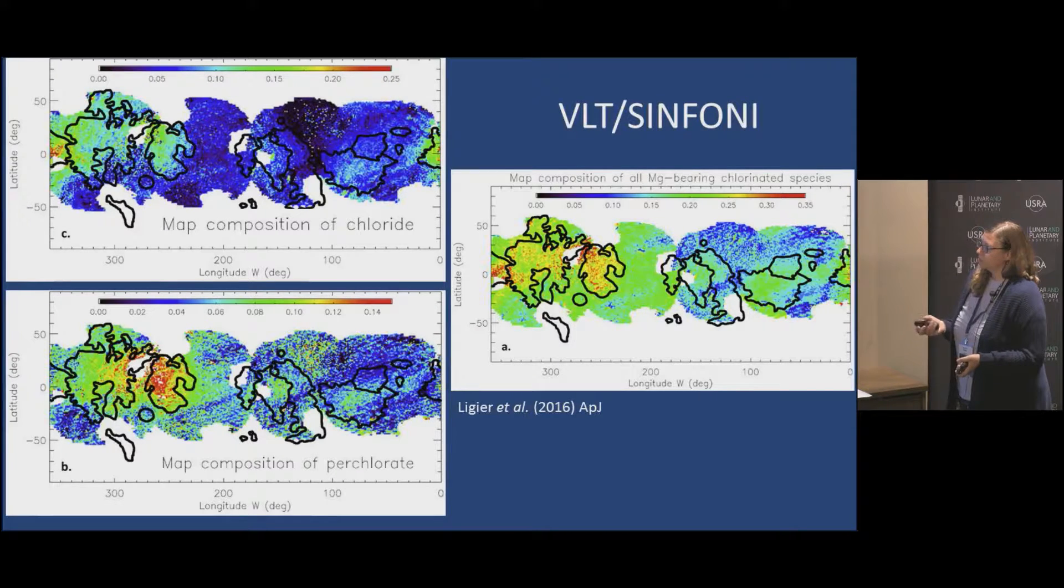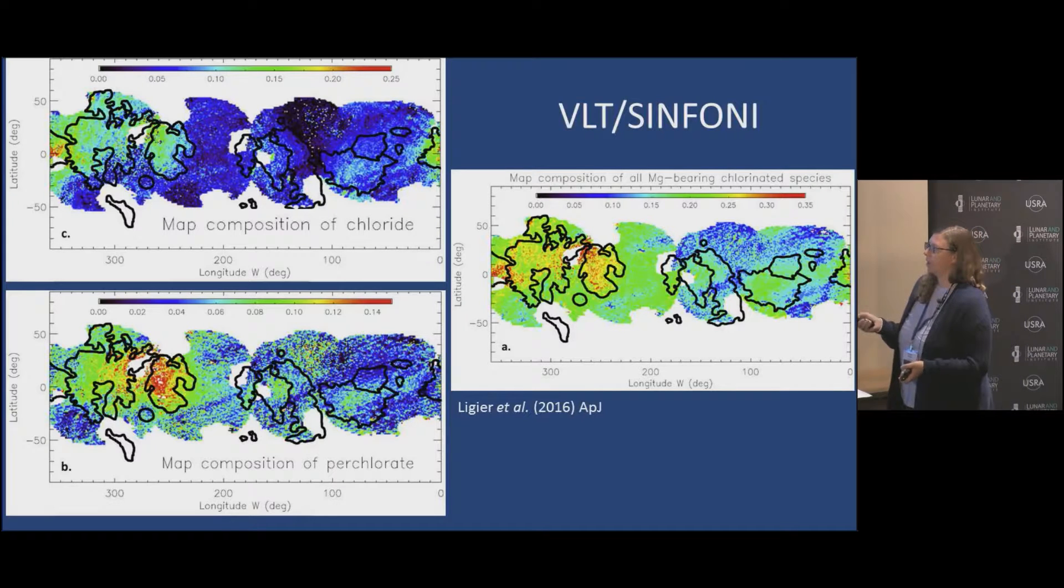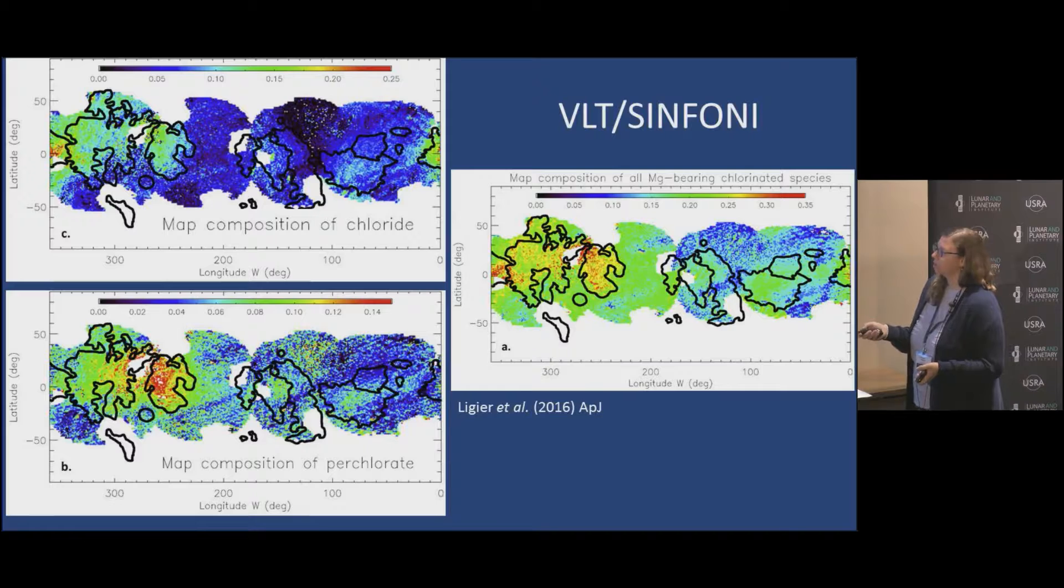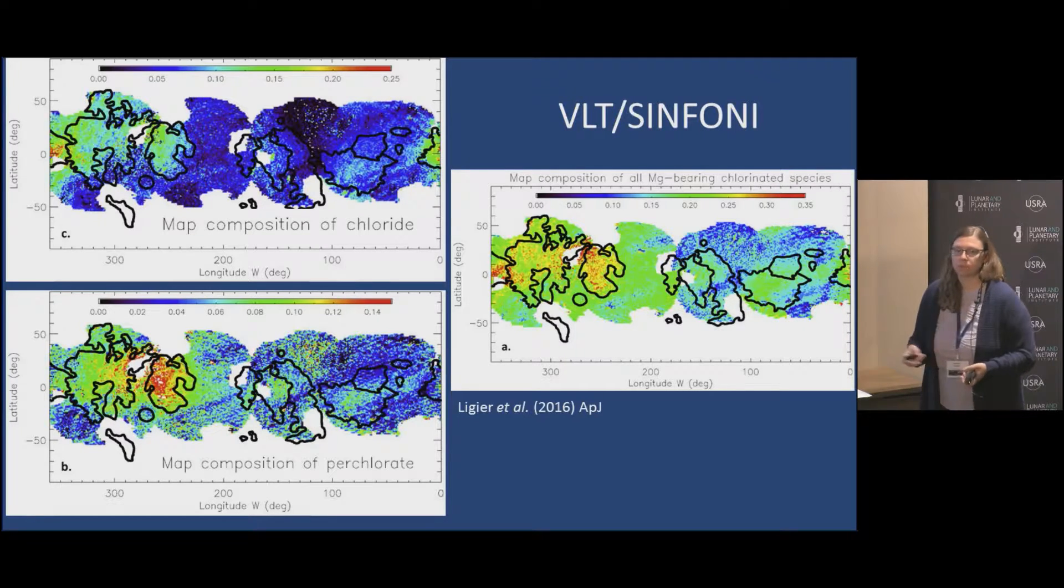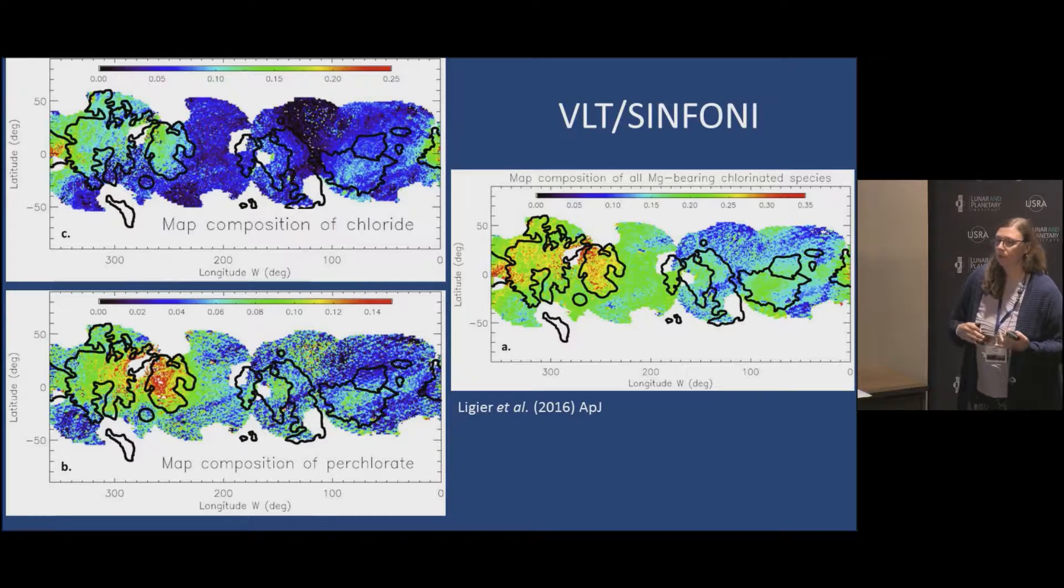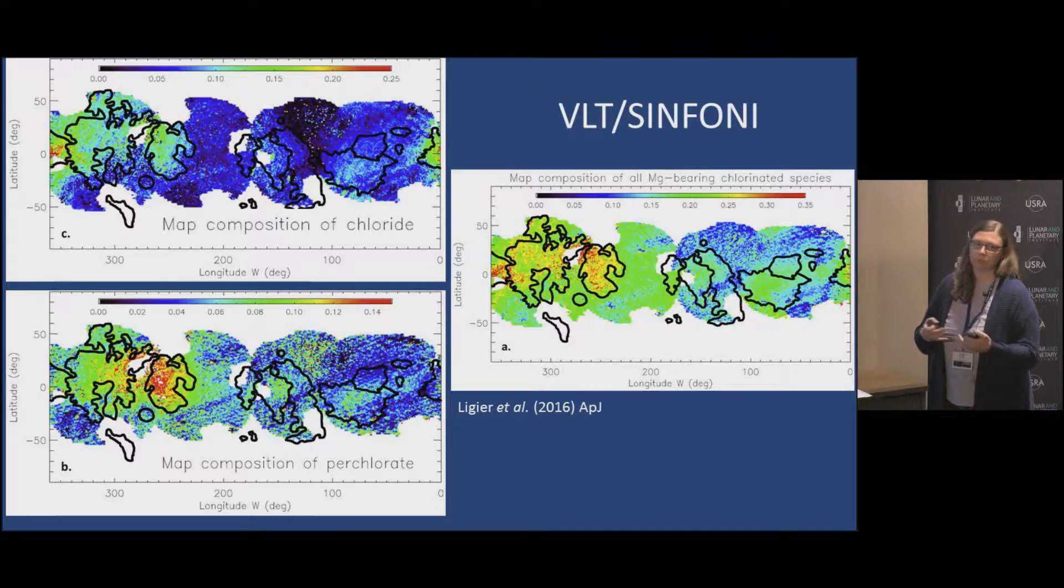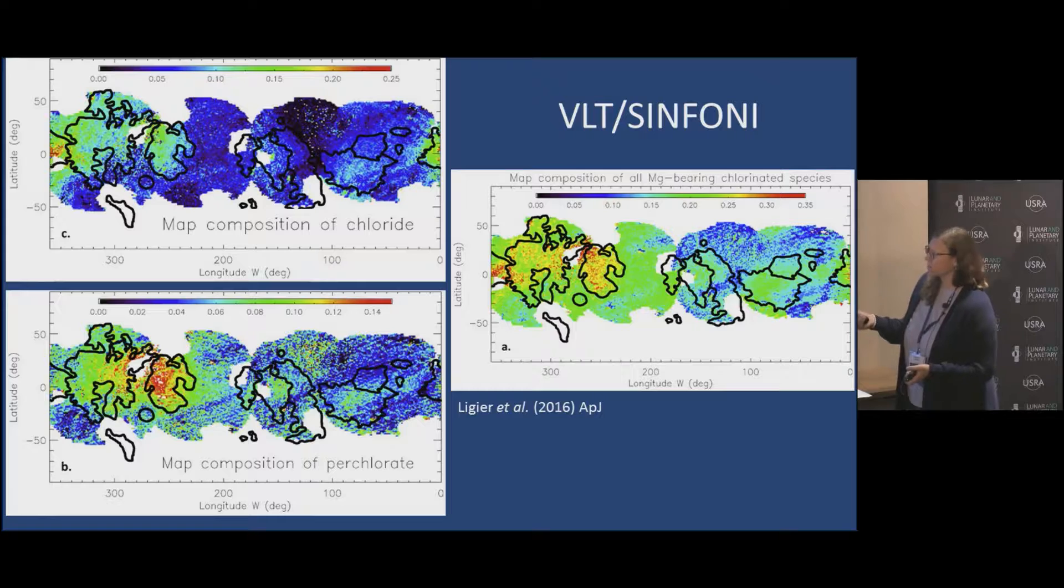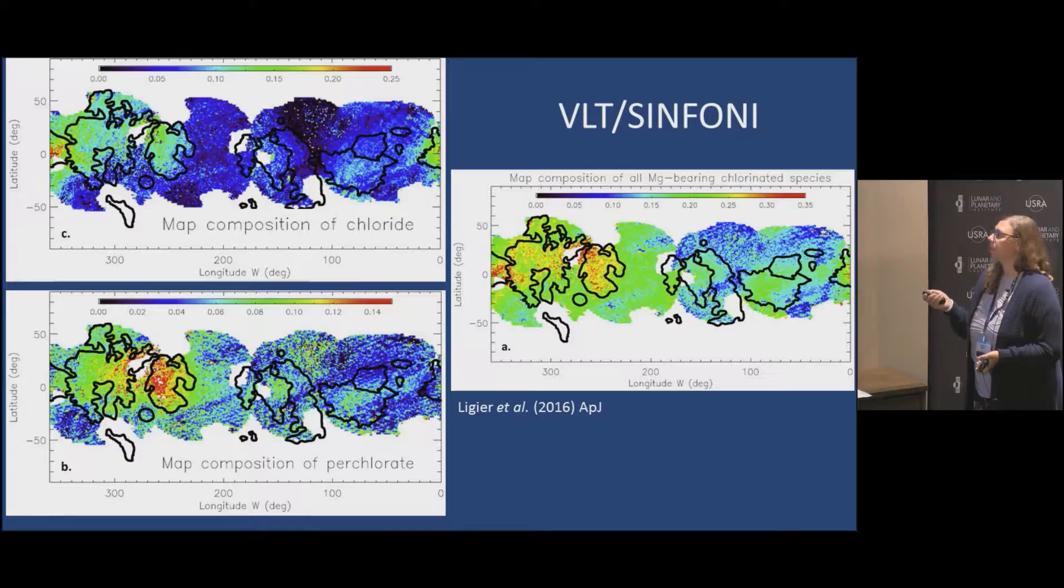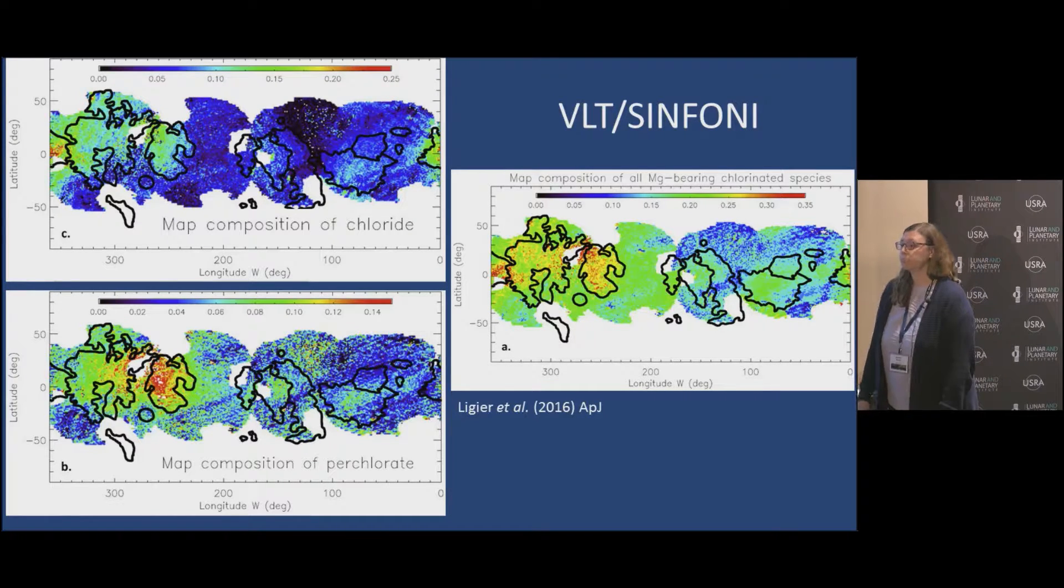Ligier used some of the chlorine salt spectra that I published using VLT Sinfoni to map, and they think that through linear mixing modeling the chloride maps pretty well, as does the perchlorate. There actually are a little bit of some differences where they map to. This is magnesium chloride and it is pretty well centered at zero degrees, whereas the perchlorate is more on the 270 region. Could there be chlorides and then radiolysis or bombardment? It's interesting to see the difference in where these salts are actually occurring. If you combine the magnesium chloride and magnesium perchlorate, you're getting up to almost a third of the weight percent as these magnesium chlorine salts according to their modeling.